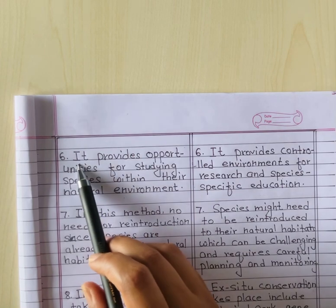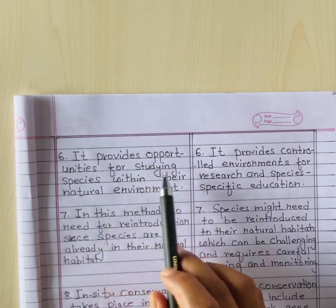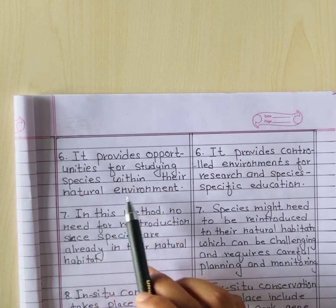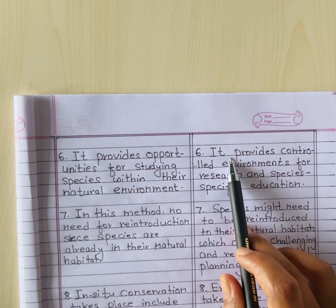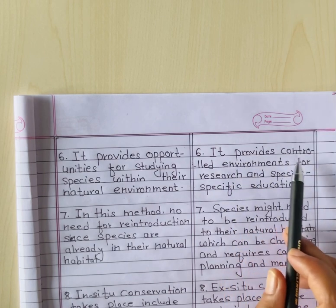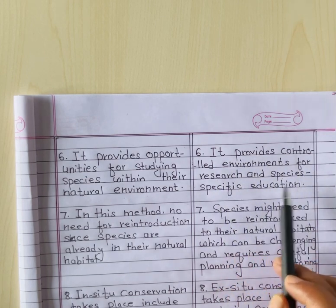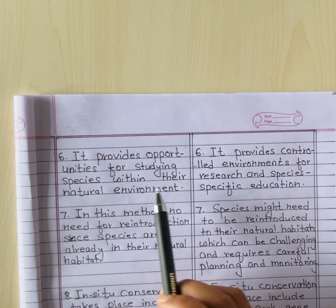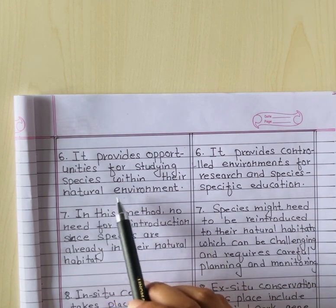Sixth point: in-situ conservation provides opportunities for studying species within their natural environment. Ex-situ conservation provides a controlled environment for research and species-specific education, though it is limited to species removed from their natural environment.